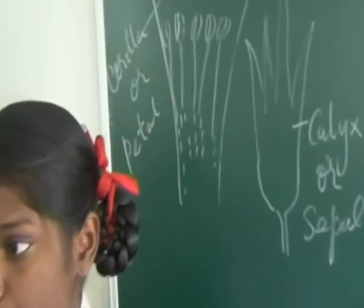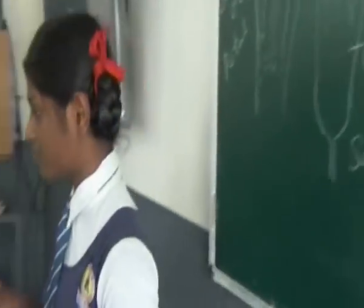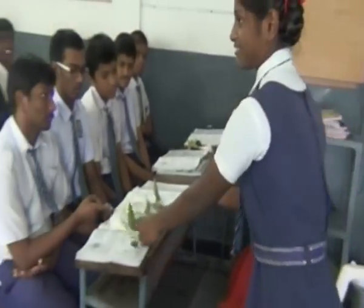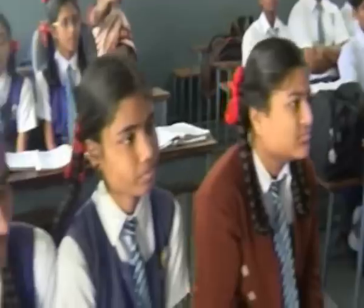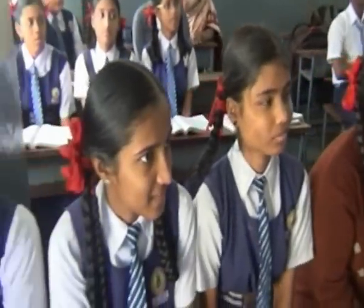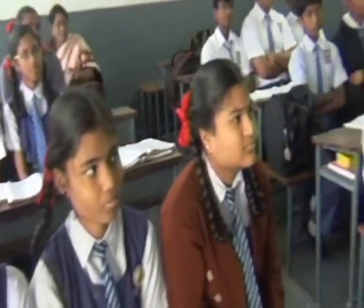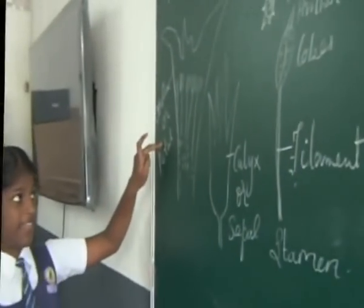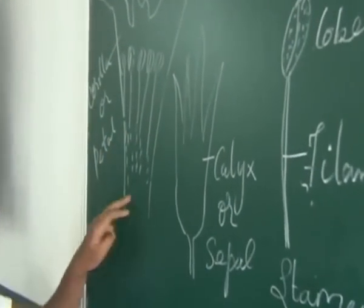Now I will cut the flower and show you the inner parts of the flower. This is the corolla, which is also known as petals. And these are the inner walls of the flower.